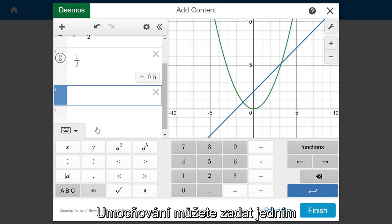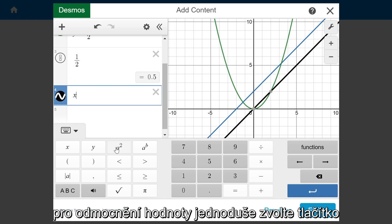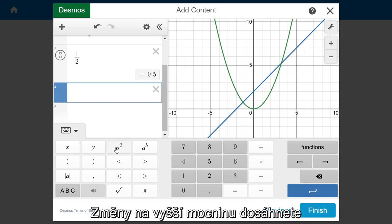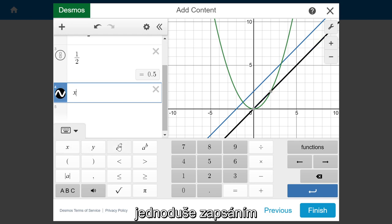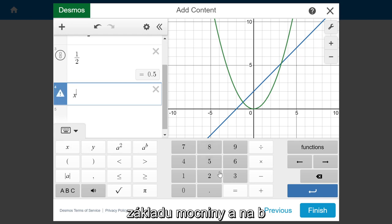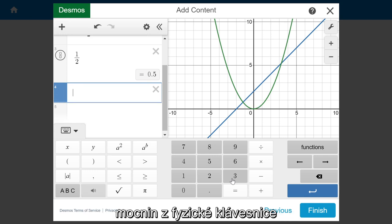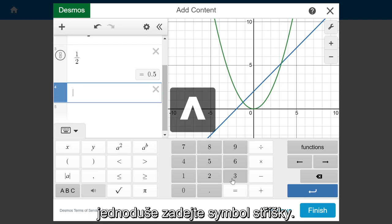You can enter exponents in one of the following ways. To square a value, simply select the A² button. To raise something to a higher power, simply enter your base, select A to the B, and then enter your exponent. To enter exponents from a physical keyboard, simply type in the caret symbol.